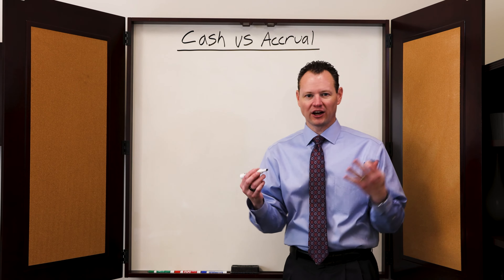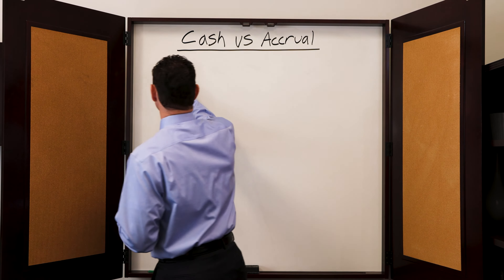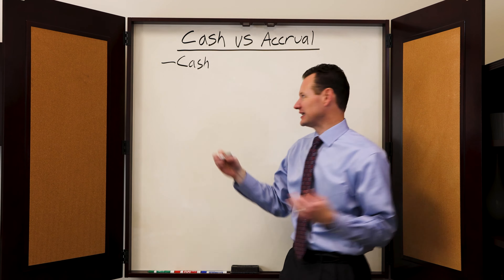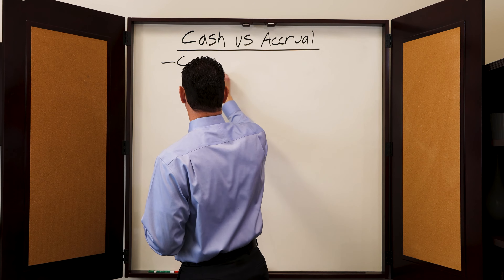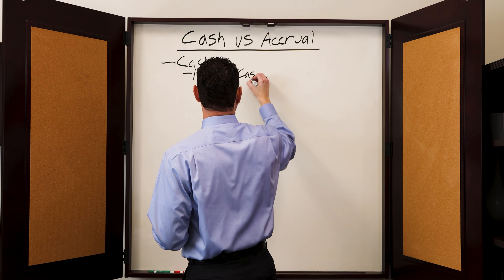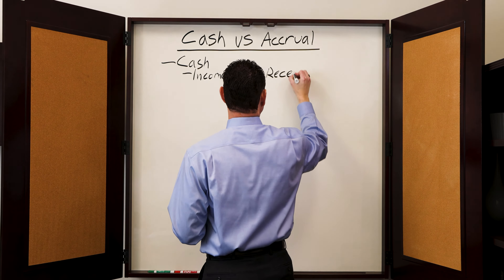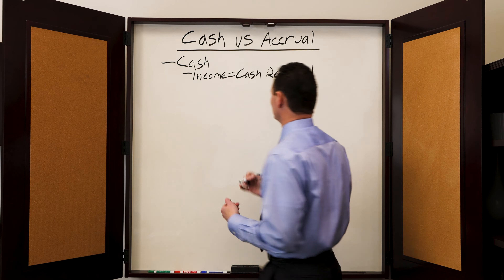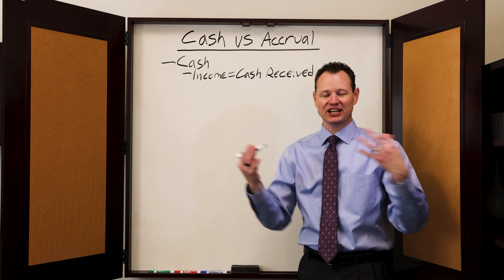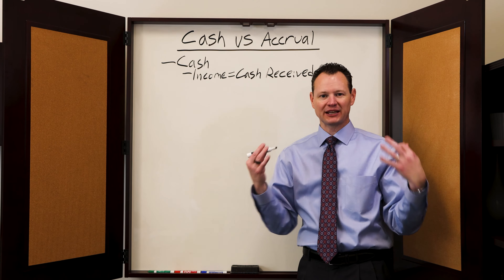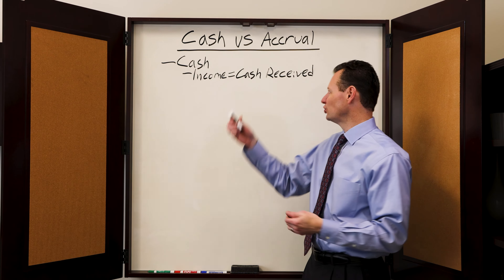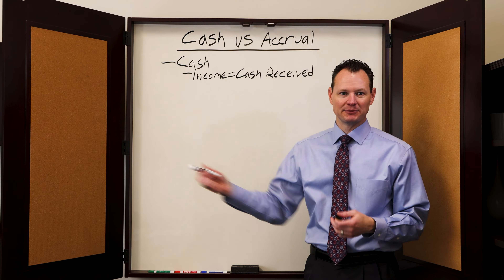So first off, what are each of these methods? For the cash method, income is recognized when cash is received — when cash is deposited into your bank account, when you receive a cash payment, a check, or something comes into your bank account. You recognize income when that payment comes in.